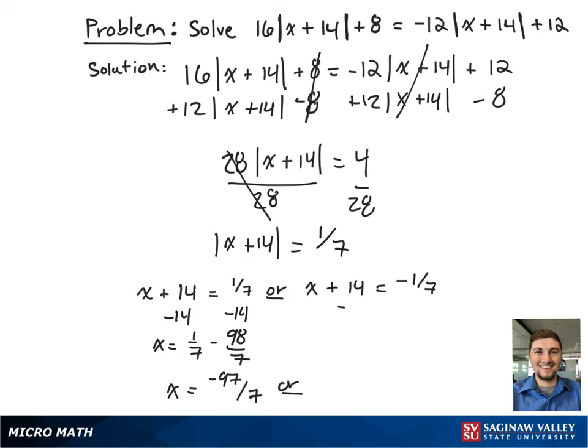Moving to the right hand side, again subtracting both sides by 14, this gives x equals negative 1 seventh minus 98 sevenths and reduces to x equals negative 99 sevenths.